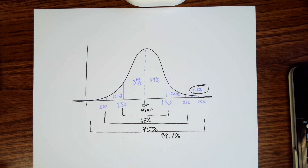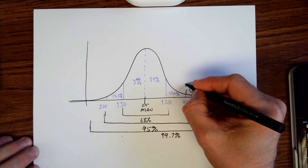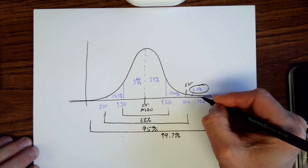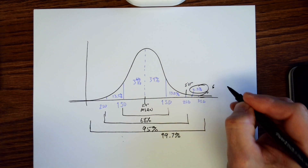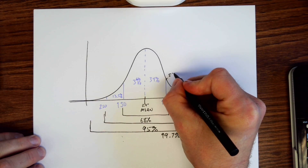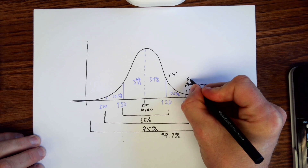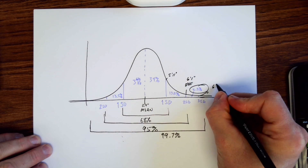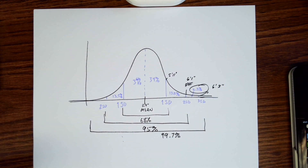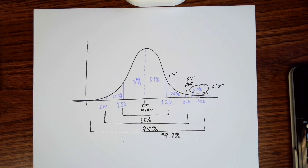Anything above 6'1" and you're talking about an extremely small portion of the population — 2.5%. So this would be 5'11", this would be 6'1", and this would be 6'3". Only about 2.5% of the population is between 6'1" and 6'3". We're not talking about a very big group percentage-wise. With 350 million people that's still a lot of people in absolute numbers, but from a percentage standpoint it is a very small percentage of the population.